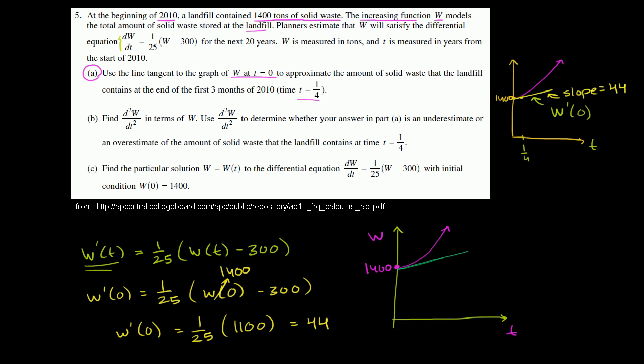And what that's saying is, if we go out one unit of time, which is one year, then we would have gone up 44 in tons. So if we use this line as an approximation, after one year, this point would have 1,444 tons.